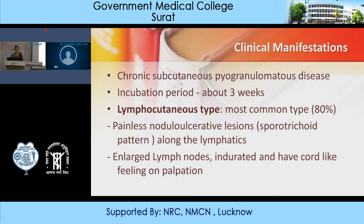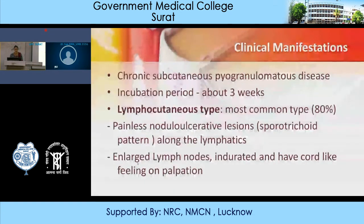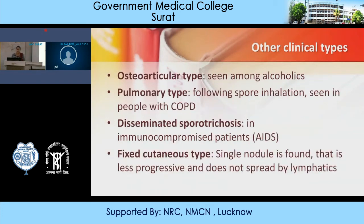The lymphocutaneous type is the most common presentation, showing painless nodulo-ulcerative lesions along the lymphatics in the skin, with enlarged, indurated, cord-like lymph nodes on palpation. Other clinical types include: osteoarticular type seen among alcoholics; pulmonary type following spore inhalation in people with COPD; disseminated sporotrichosis seen in AIDS patients; and fixed cutaneous type, a single nodule that is less progressive and does not spread via lymphatics.